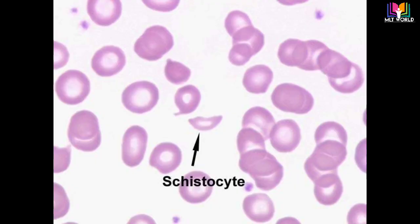Next is schistocytes. Schistocytes are red blood cell fragments. The presence of schistocytes on a peripheral blood smear is a hematological emergency that requires prompt review and investigation for thrombotic microangiopathy. Schistocytes are split red blood cells that indicate microangiopathic hemolytic anemia, and their presence in peripheral smear is the hallmark for the diagnosis of thrombotic thrombocytopenic purpura (TTP).